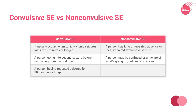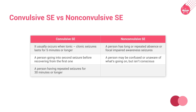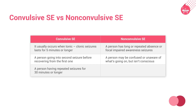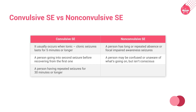Non-convulsive SE symptoms are more difficult to recognize than convulsive SE symptoms. It occurs when a person has long or repeated absence or focal impaired awareness seizures. A person may be confused or unaware of what is going on.